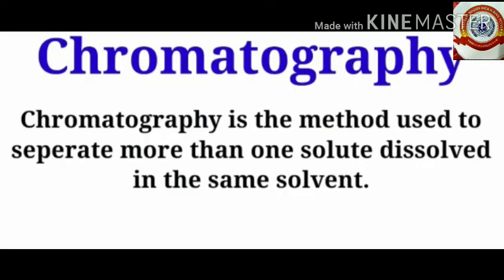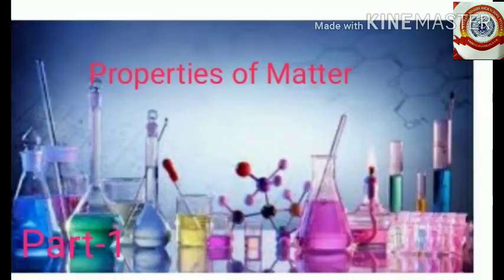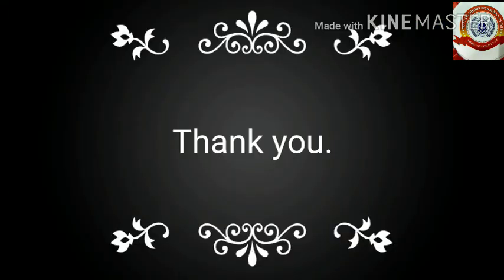Finally, we discussed about chromatography. It is the method used to separate more than one solute dissolved in the same solvent. Examples include separating components of dye and separating poison from blood. Students, these are the points we discussed in this chapter, 'Properties of Matter.' Watch the videos carefully, study well, write notes, and prepare well for your exams. Thank you.